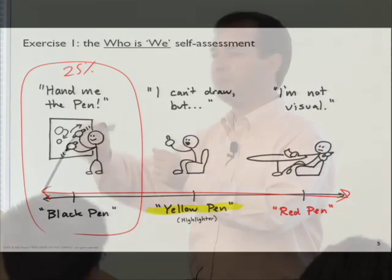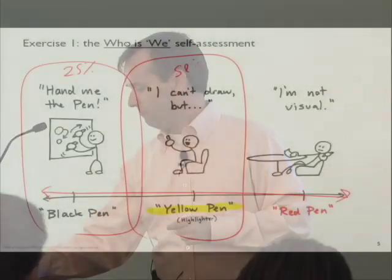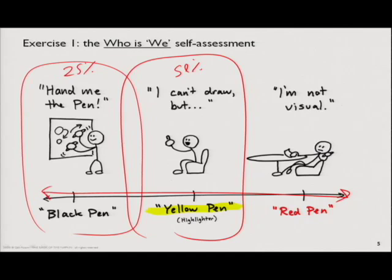The black pen people have no fear. They're highly confident — they take a big black marker and make bold drawings right up on the whiteboard immediately. Then in the middle, typically representing about half the people in a meeting, are what I call the yellow pen people or the highlighters. These are the people who will be sitting back watching the other person draw, kind of into it, but the yellow pen person always says, 'I can't draw, but...' — and then goes up to the picture that's already there and makes connections. They find the areas that are really important and say, 'Those are the areas we need to focus on.'